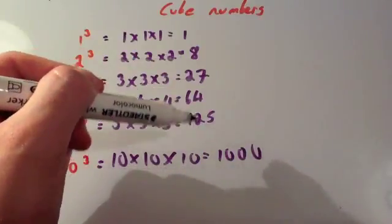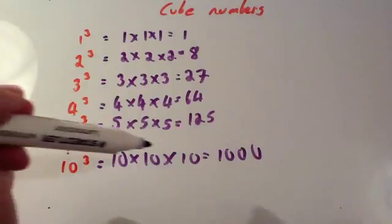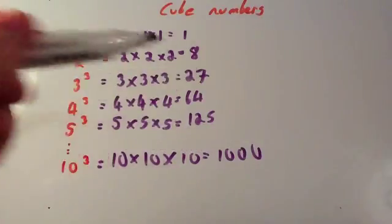These 5 are very useful to learn: 1, 8, 27, 64, 125. Also have written a thousand there because a thousand is a very common cube number that they refer to.